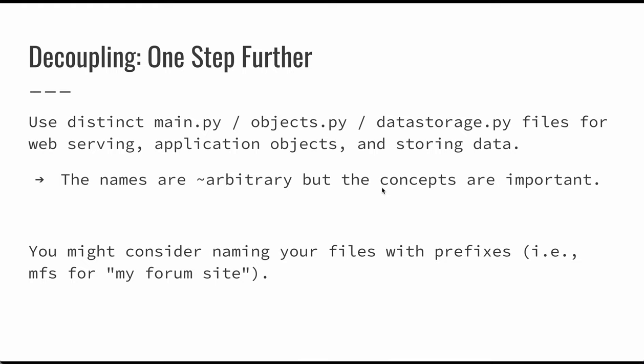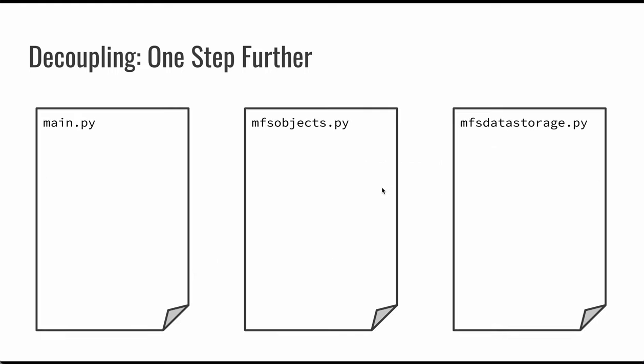We really have a file that's responsible for our logic and how our code behaves, an objects file that represents our data, and a data storage file that represents how we actually save that data to some persistent storage. For example, if we were building a forum site, we might start prefixing our files in this way — using MFS as a set of examples. So we might have an MFS main.py responsible for application logic and web serving, an MFS objects file responsible for our data, and an MFS data_storage file so that we would actually be able to store that data in persistent storage.